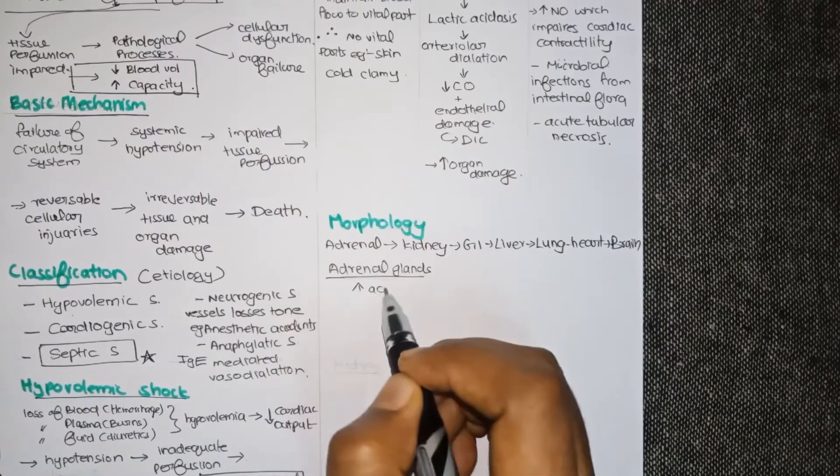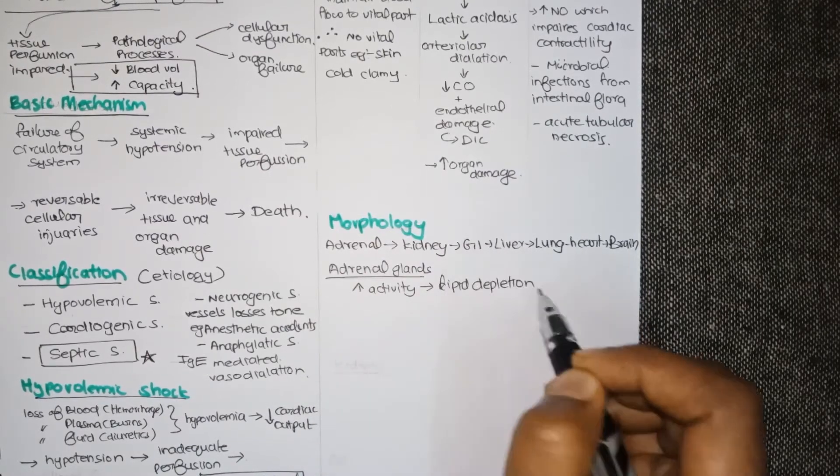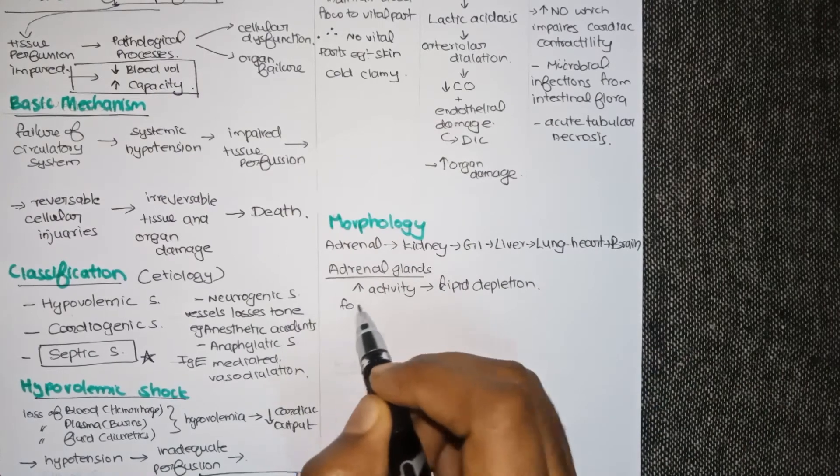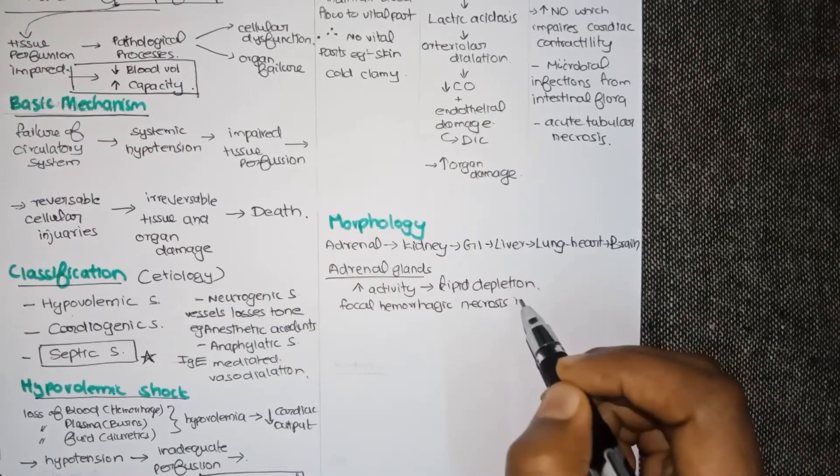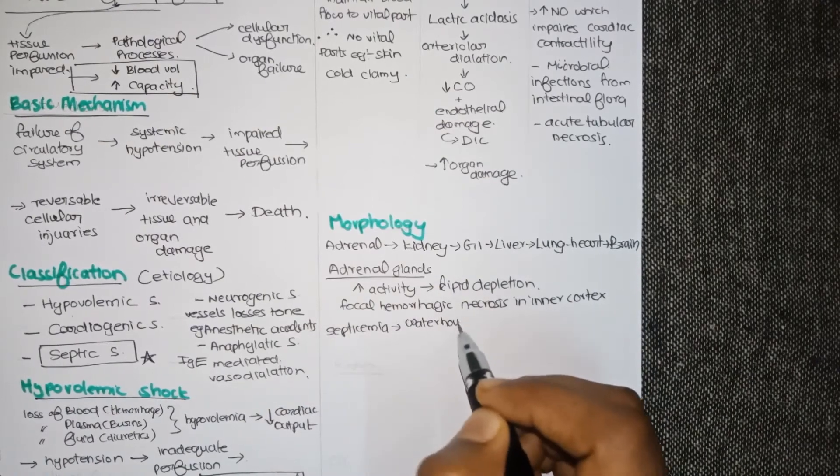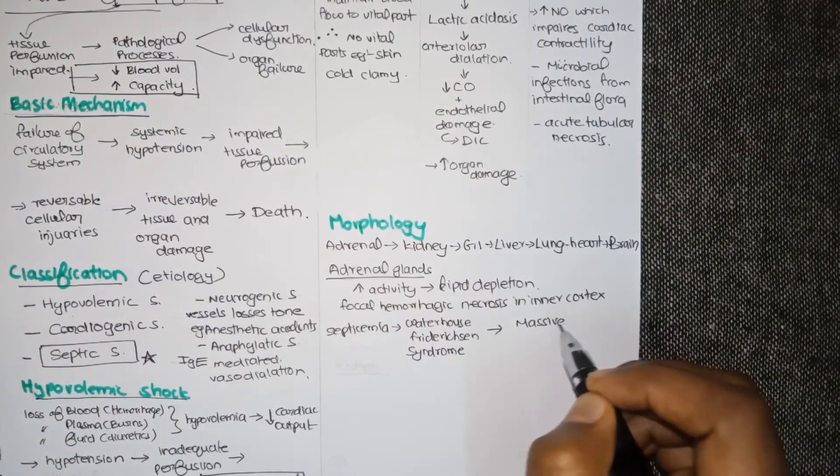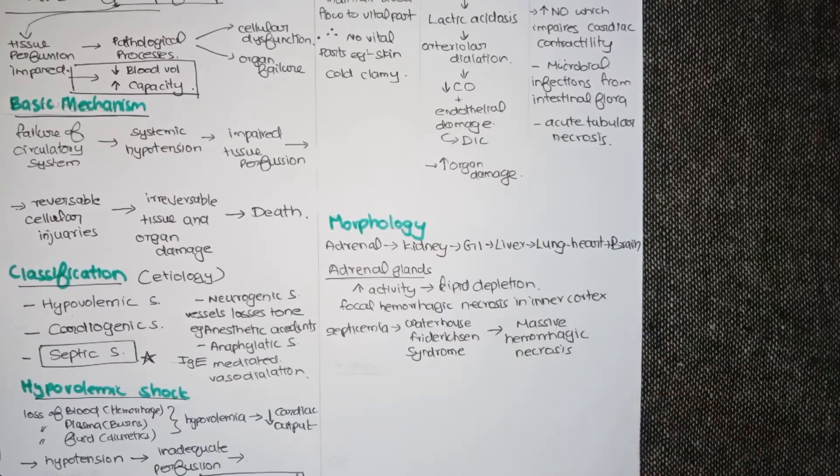Adrenal glands due to their increased activity result in lipid depletion in their cells. Focal hemorrhagic necrosis is seen in their inner cortex. And in case of septicemia, a condition known as Waterhouse-Friderichsen syndrome results in massive hemorrhagic necrosis.